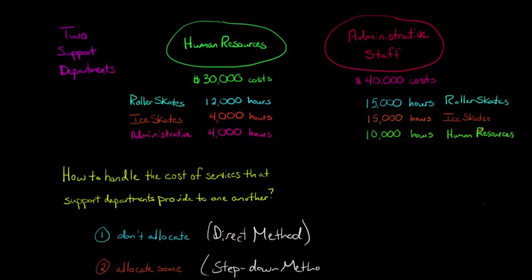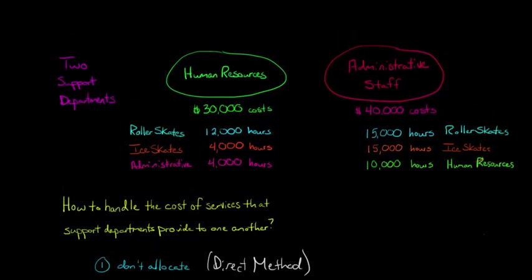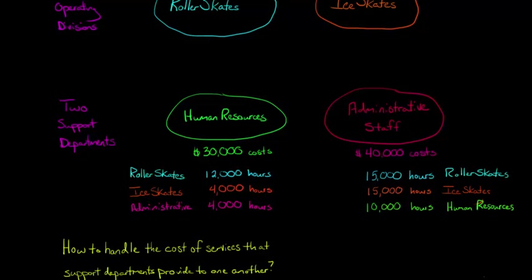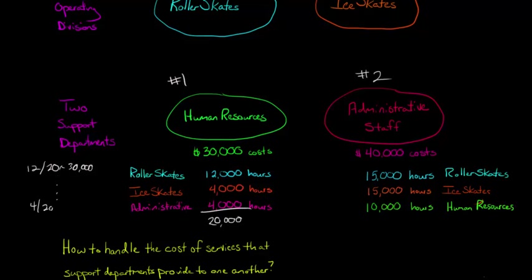With the step-down method, we sequentially rank the support departments. For example, we rank human resources number one and admin staff number two. This time, instead of ignoring the 4,000 hours HR spends on admin, we include them. Adding all hours together gives 20,000, so it's 12/20 times $30,000 for roller skates, and the administrative division gets allocated 4/20ths of that $30,000 in HR costs added to it.